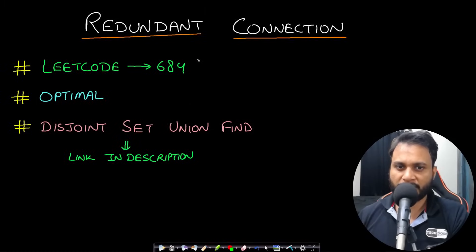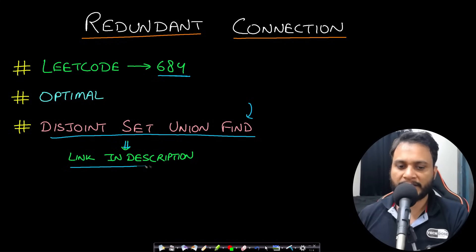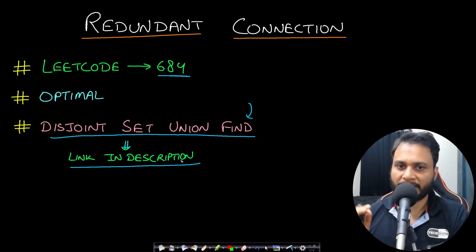Hello guys, welcome back to TechDose. In this video we will look at the Redundant Connection problem, which is LeetCode number 684. This problem has a prerequisite of Disjoint Set Union-Find because I will be solving it using the most optimal approach. I have already made a video on Disjoint Set and all the optimizations like union by rank and path compression, so please find the link in the description below.